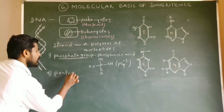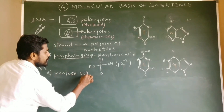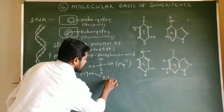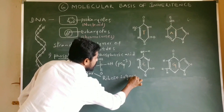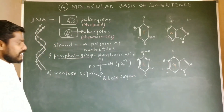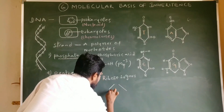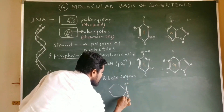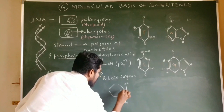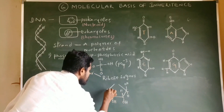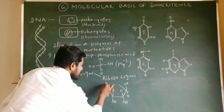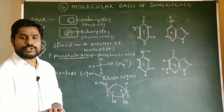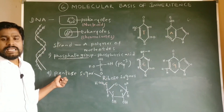The pentose sugars are generally ribose sugars. Here, if you see the structure of a ribose sugar, this is the first carbon, second carbon, fourth carbon, and fifth carbon with oxygen. This is the structure of a ribose sugar, which is a pentose sugar.